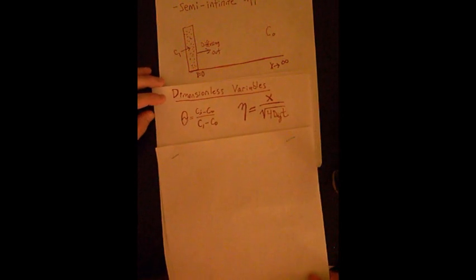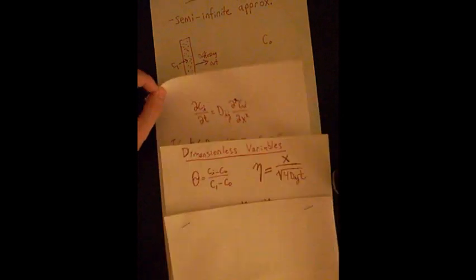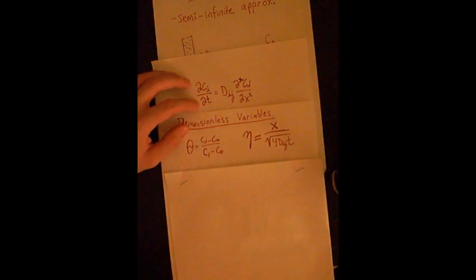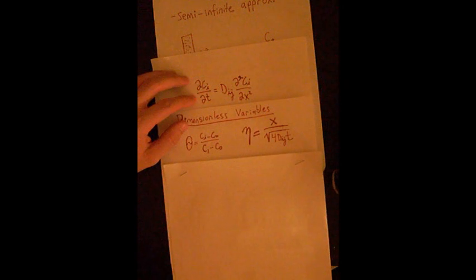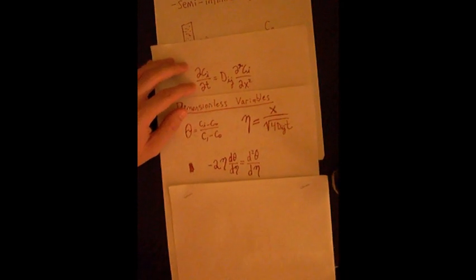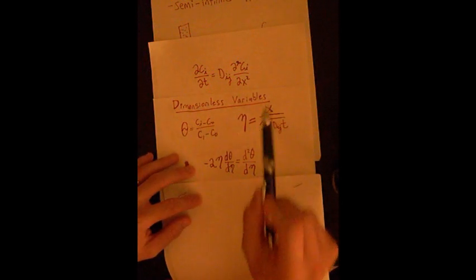So we can use these dimensionless variables to then change this governing equation to dimensionless terms, and this is what we get. And again you can go through the math and just rearrange these equations, solve for Ci, solve for x, and put them into the equations.